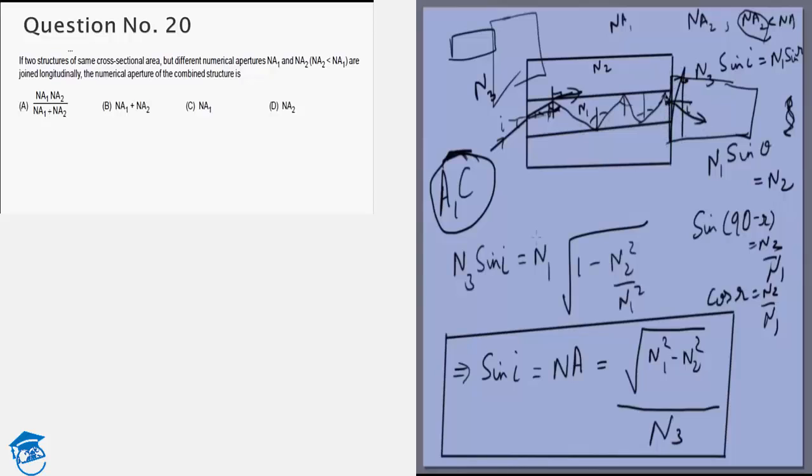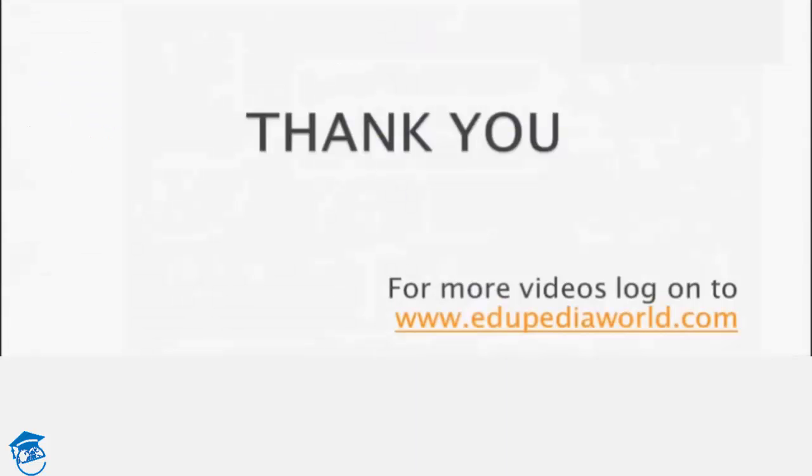So the numerical aperture of the combination will be the same as the numerical aperture of the smaller one, which is NA2. So my answer to the final question will be D, NA2. This completes the solutions for Paper 2 Physics of JEE Advanced 2015.